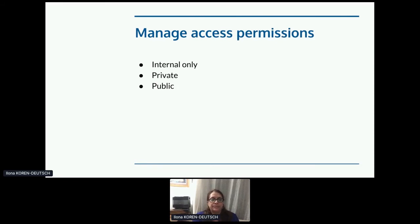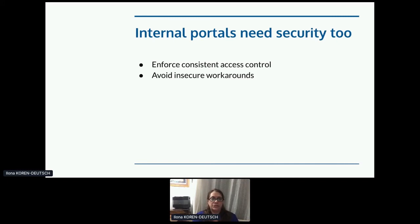For managing access permissions, there are three main categories for developer portals. Internal only: available only to your organization's API developers — useful when your API team is testing new APIs before they're publicly available, or if you're a company that doesn't productize its software but has internal APIs. Private portal: visible to developers with explicit permission granted during registration. Public portal: visible to all registered developers or to everyone, whether or not they register. All of these are valid but have different security needs. Internal portals need security too — it enforces consistent access control and avoids insecure workarounds like sharing API keys over email.